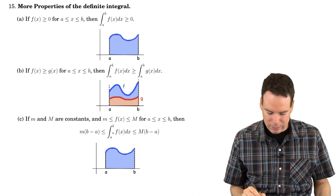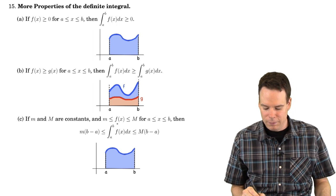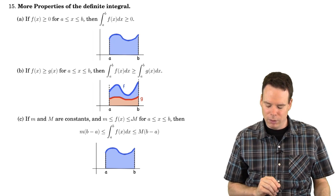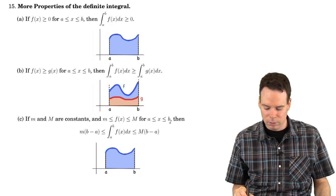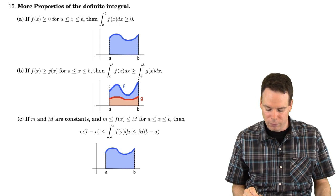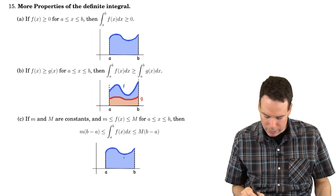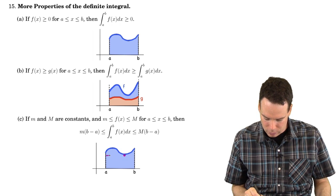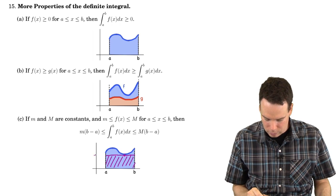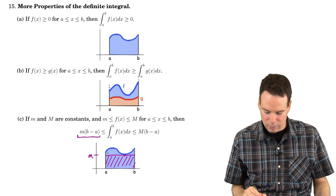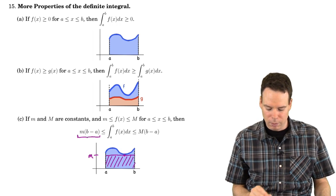Now what about this last property? If our function f is trapped between two values, little m and big M — little m is a lower bound on the function, big M is an upper bound on the function — and those bounds hold on the entire interval, then we can say that the integral of the function is trapped between these two values. This is just coming from this picture. So little m, maybe it's this point down here. If I take the rectangle of height little m, the area of this rectangle is this value here, but the area under the curve is bigger than the area of that rectangle. So the integral must be bigger than m times (b minus a).